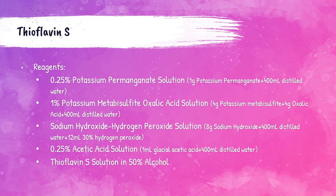Reagents for the Thioflavin S method include 0.25% potassium permanganate solution, 1% potassium metabisulfite oxalic acid solution, sodium hydroxide hydrogen peroxide solution, 0.25% acetic acid solution, and Thioflavin S solution in 50% alcohol.